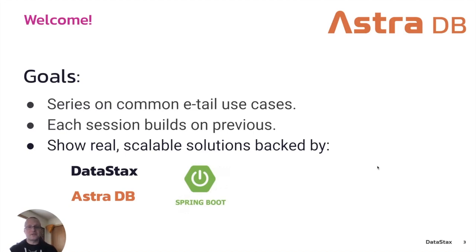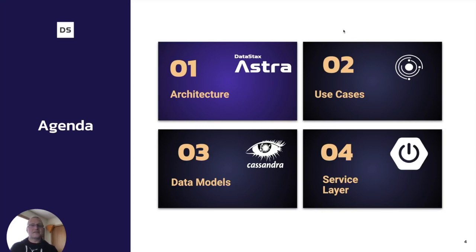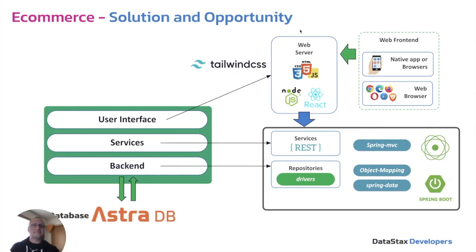Our goal for today is to work through this first session in a series on common e-commerce retail — colloquially known as e-tail — type use cases. Each session is going to build on the previous one and we're going to show how simple it is to build scalable solutions backed by Java Spring Boot and ultimately running on DataStax AstroDB. We're building a simple UI — a React.js user interface built with Tailwind CSS — with a Java Spring Boot service layer hitting AstroDB on the back end.